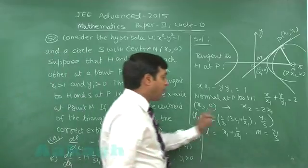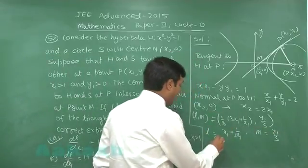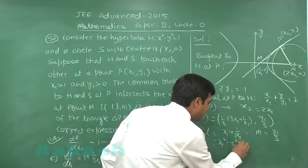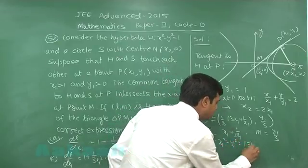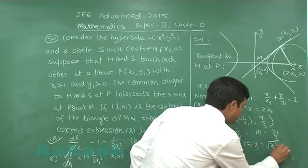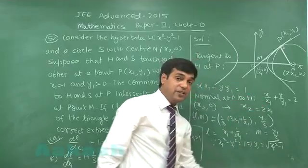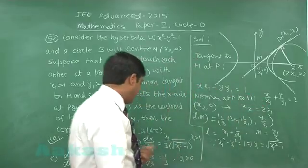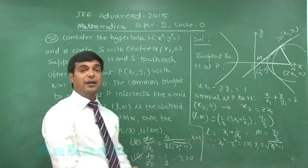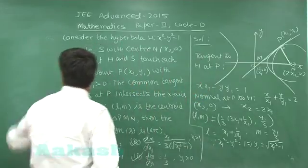To verify option b, we use the fact that P lies on the hyperbola: x₁² − y₁² = 1, so y₁ = √(x₁² − 1). Substituting this and differentiating, we can clearly find that option b is also correct.